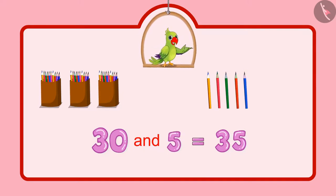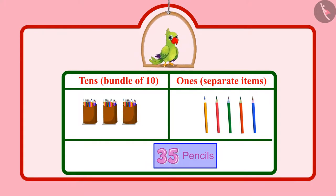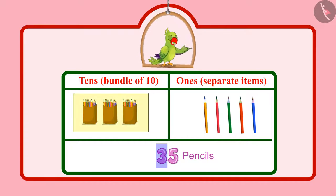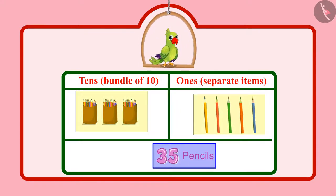So Chotu has 35 pencils in total. In 35 pencils, 3 means 3 tenths and 5 means 5 units, which means total 35 pencils.